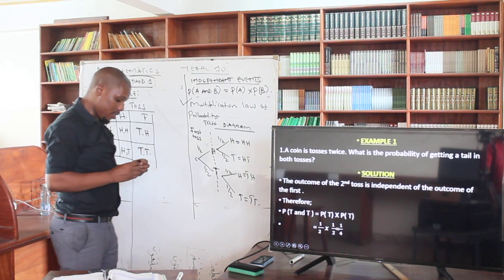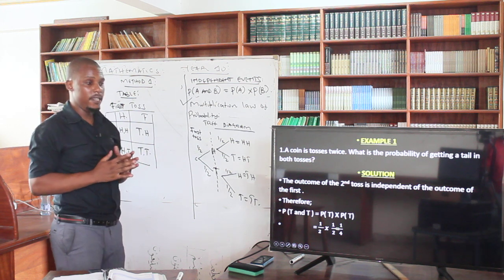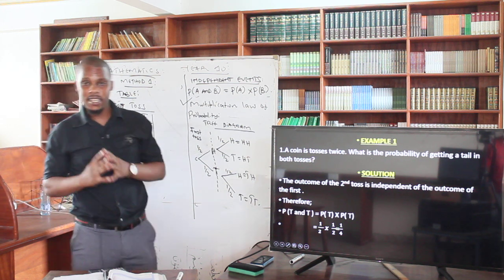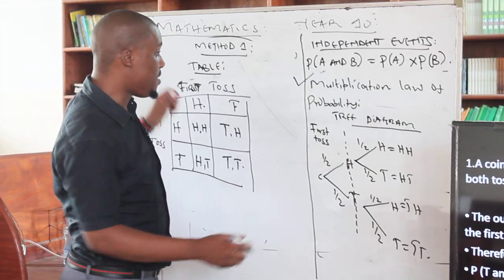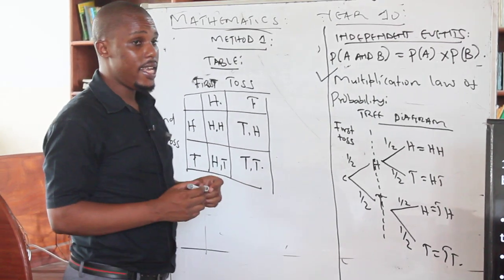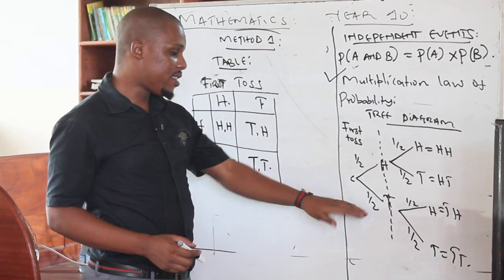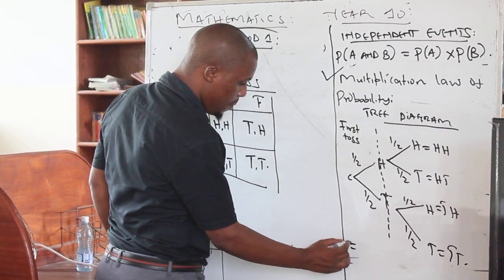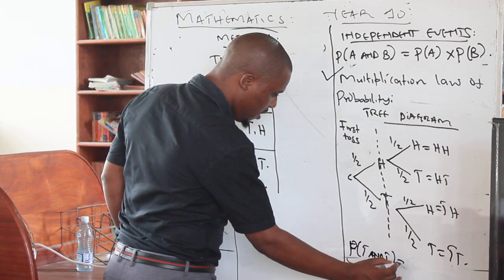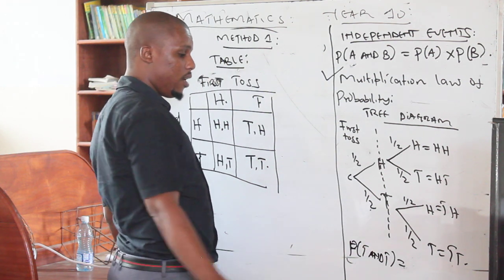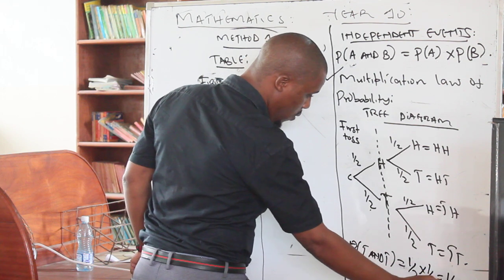I'm going to emphasize on the concept from my first part of the video. We are finding the probability of getting a tail in both tosses. From my tree diagram you can see the chance here — you get a tail in the first toss and a tail in the second toss. The probability of getting a tail and a tail: in the first toss you get a tail, that is one half, multiplied by one half in the second toss. This is going to be one over four.